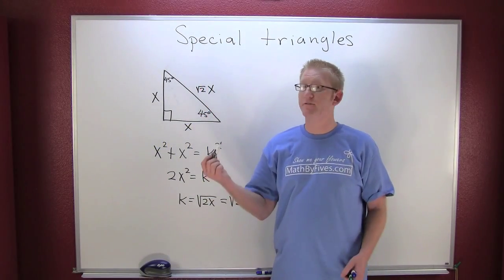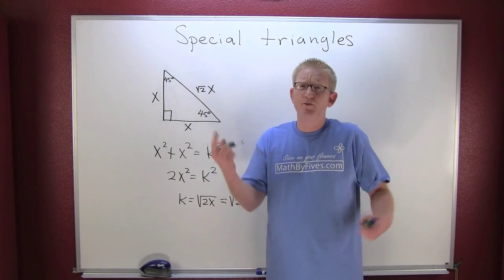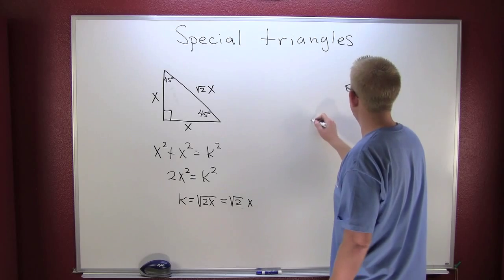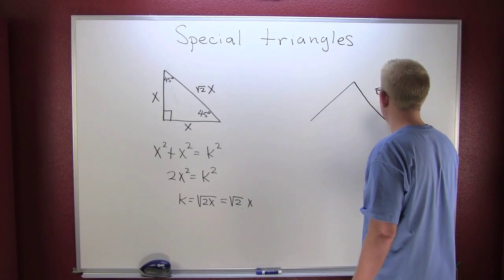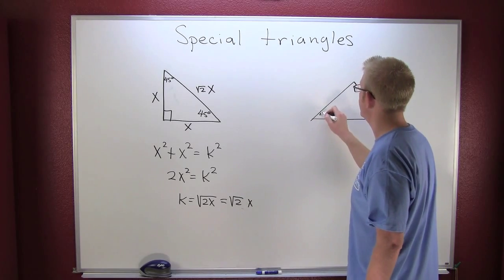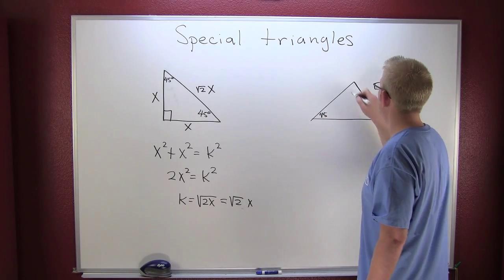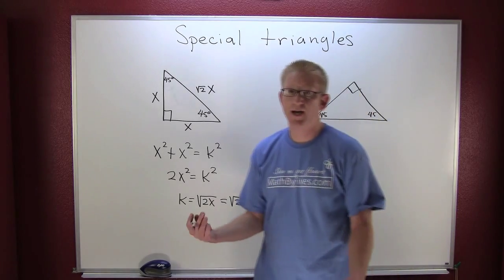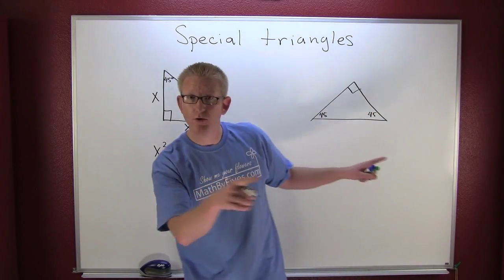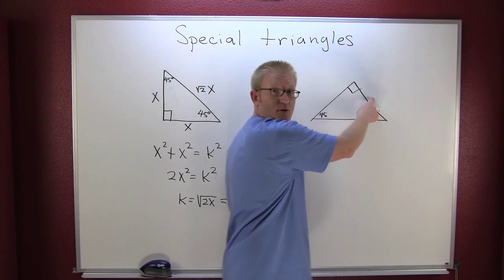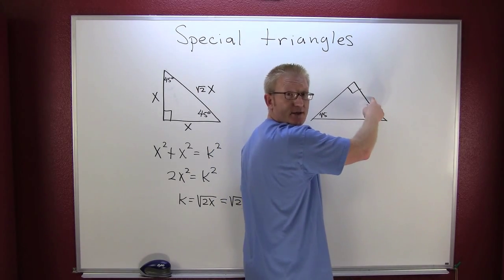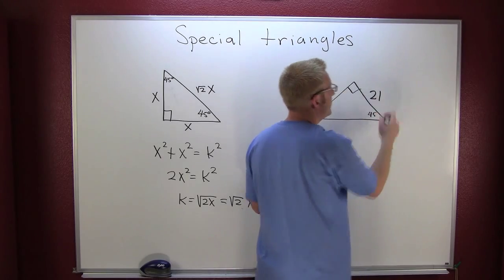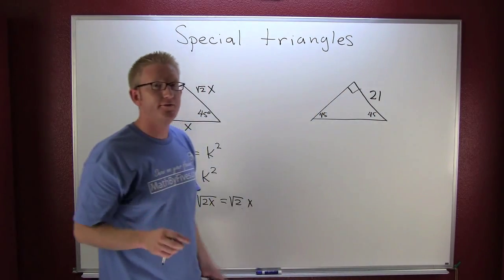So now if you're given the information that you have a 45-45-90 triangle and they just give you one of the sides, we can find the rest of the sides. Perhaps they give you this 45-45-90 triangle and then they give you a side - which side? This side. What do you want it to be? Again 21.